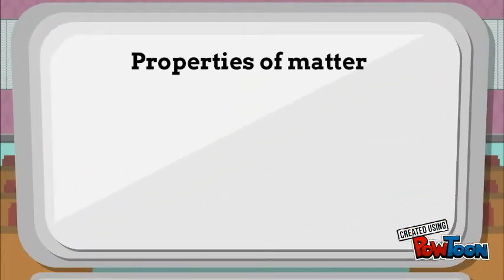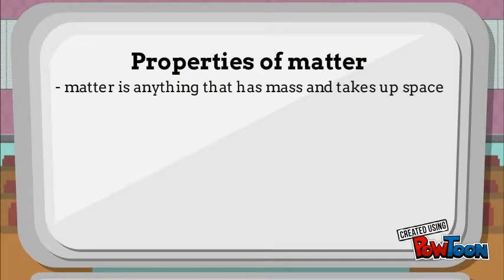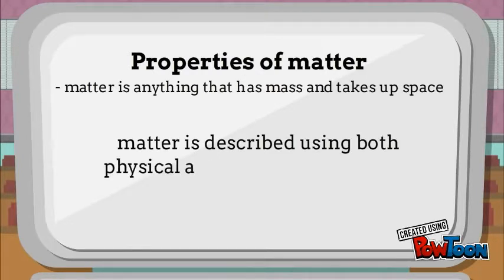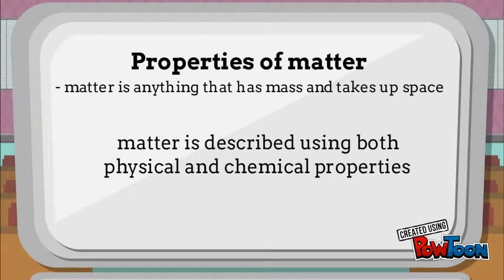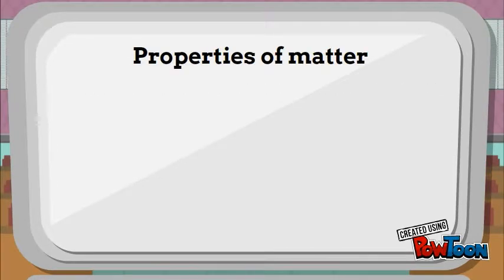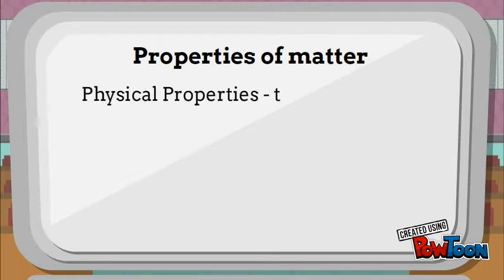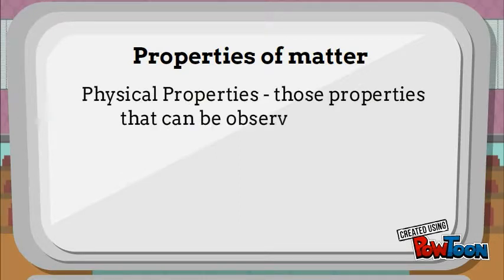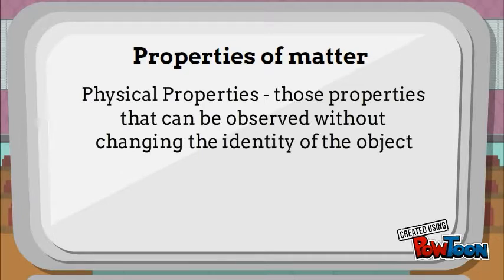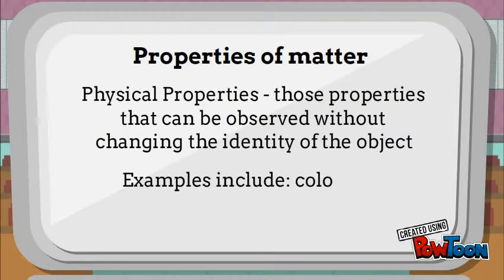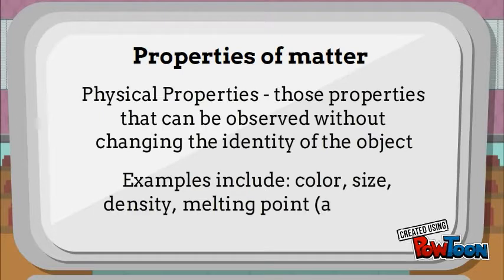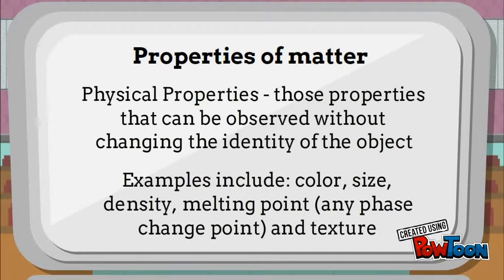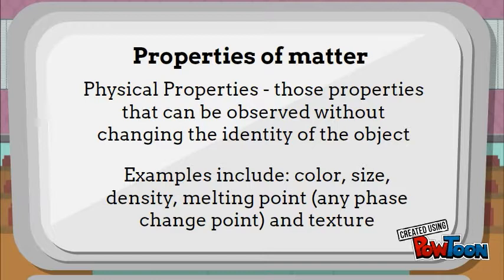Matter is anything that has mass and takes up space. It's important to be able to describe matter using both physical and chemical properties. Physical properties are those that can be observed without changing the identity of the object — examples include color, size, density, melting point, and texture. You can identify the color of something or measure its size and calculate its density without changing its identity.